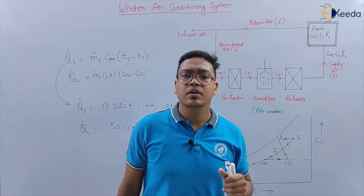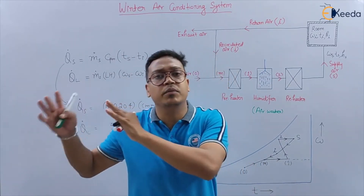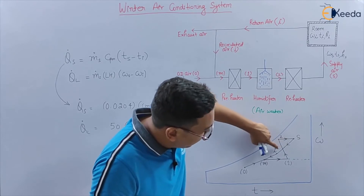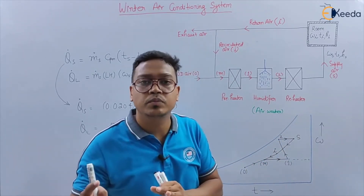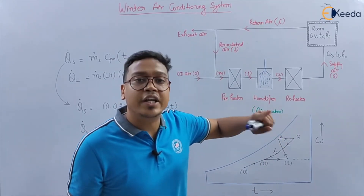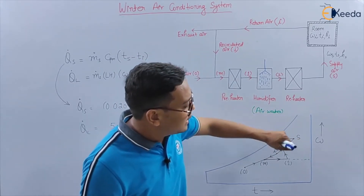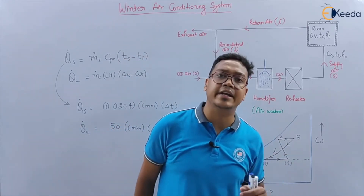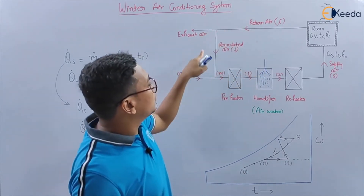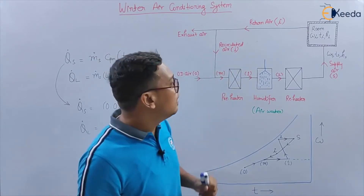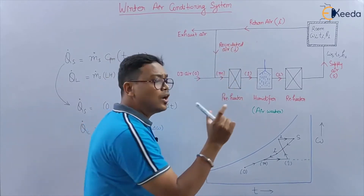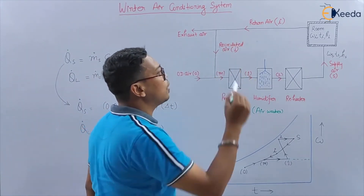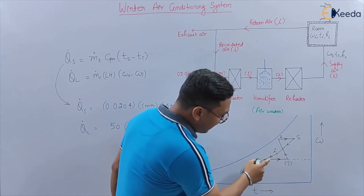As I already told, in winter there is a sensible heat loss from the room and there is a latent heat loss from the room. As this air goes into the room, there is a decrease in temperature S to Y — that means there is a sensible heat loss. And there is a latent heat loss also, S to E — a decrease in omega and a decrease in temperature. So in this case, both sensible heat loss and latent heat loss are there. Now this air will again be sent to the air conditioning system as return air. Some part of the return air goes outside as exhaust air, and some part comes back to the system as recirculated air, and then the process repeats.